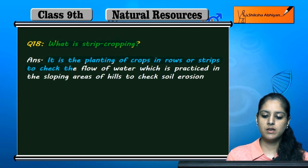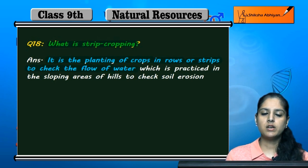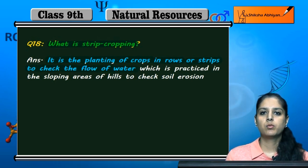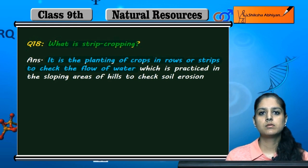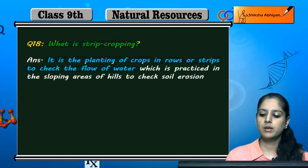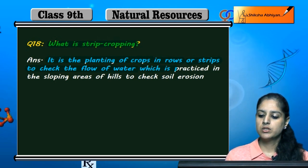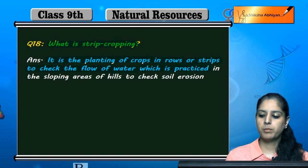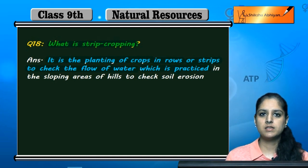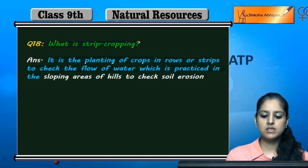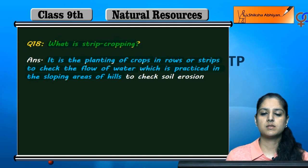...isse water ka jo flow hai wu check ho jata hai, matlab jo water hai wu zyada flow per nai jata, matlab uska jo flow hai wu control ho jata hai. Aur yeh strip cropping type ki jo cropping hai, jo farm practice hai, farming practice hai — it is practiced in the sloping areas of hills.